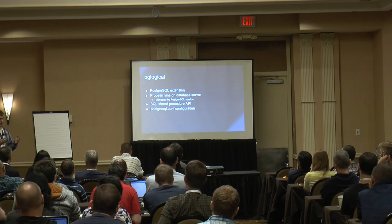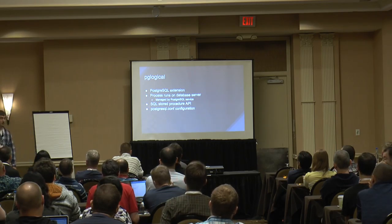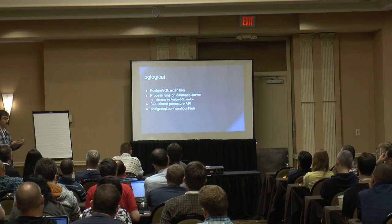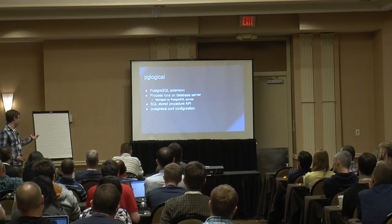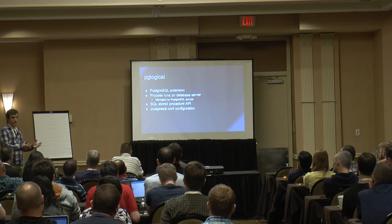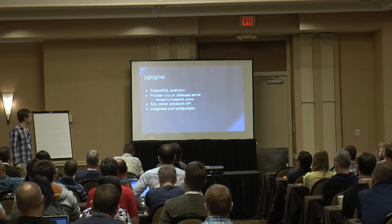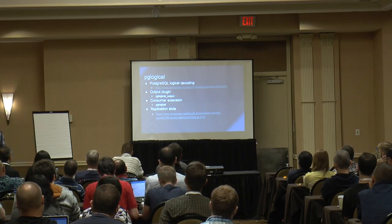It always runs on the database server — it's a worker under the Postgres service on the appliance. So we don't have to handle worker management anymore: we don't have to start a worker, make sure it's still alive, bring it down when we go down. All that goes away. The API is SQL stored procedures. So instead of writing all that configuration, you have procedures you can call from within the database to control when replication starts, when it's done, what tables you replicate. And then Postgres conf configuration — no more 'command command command run.'